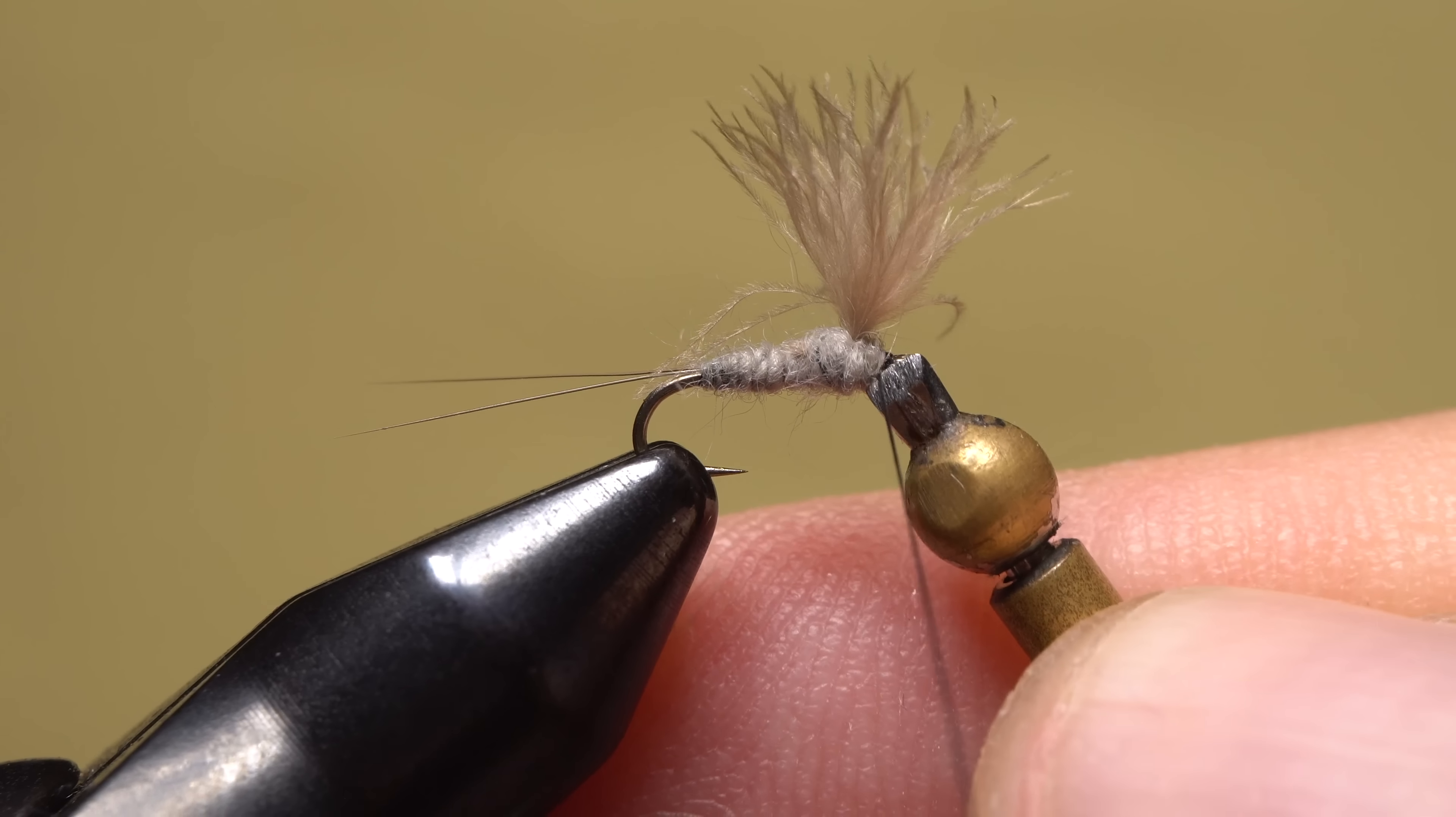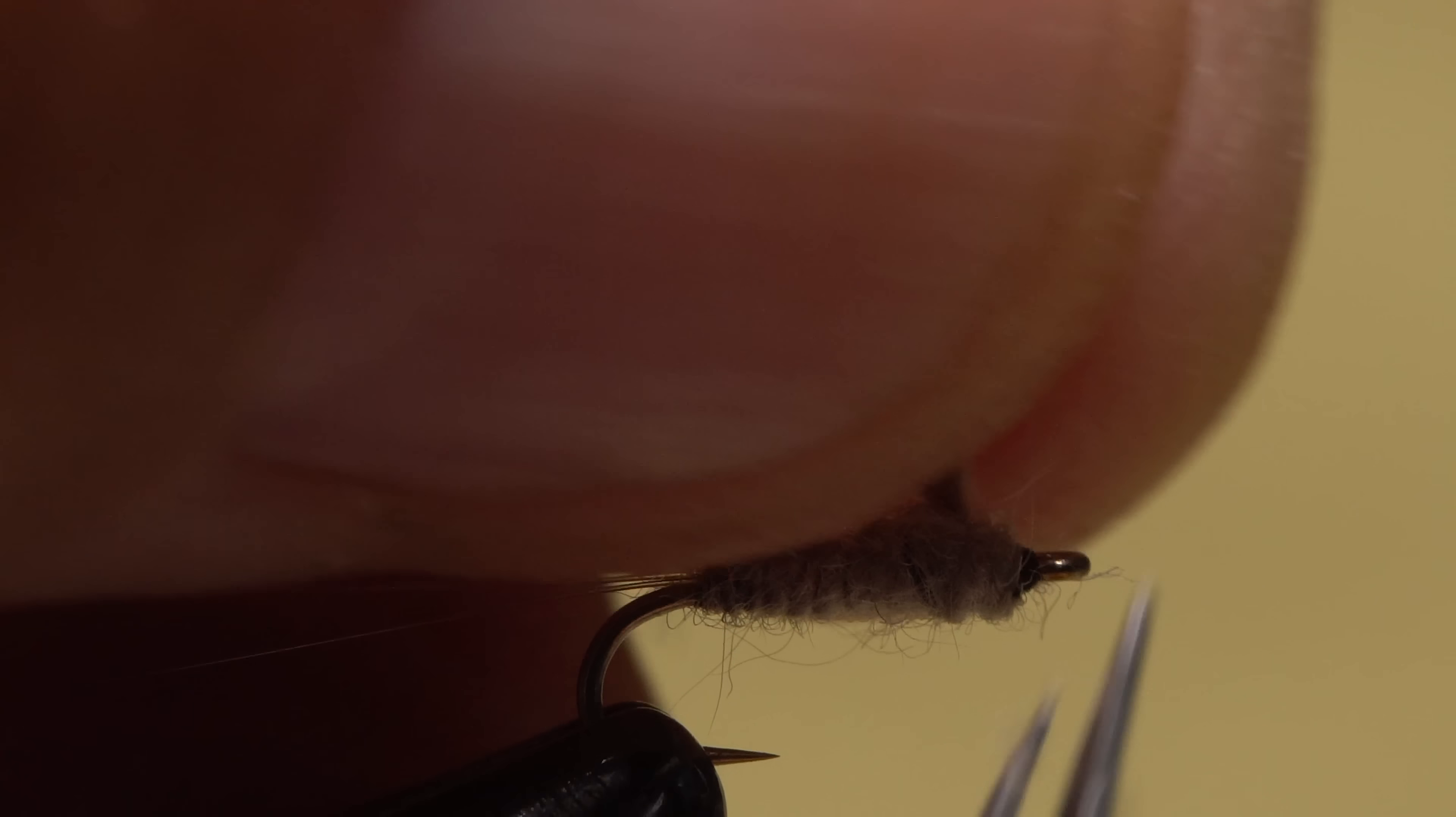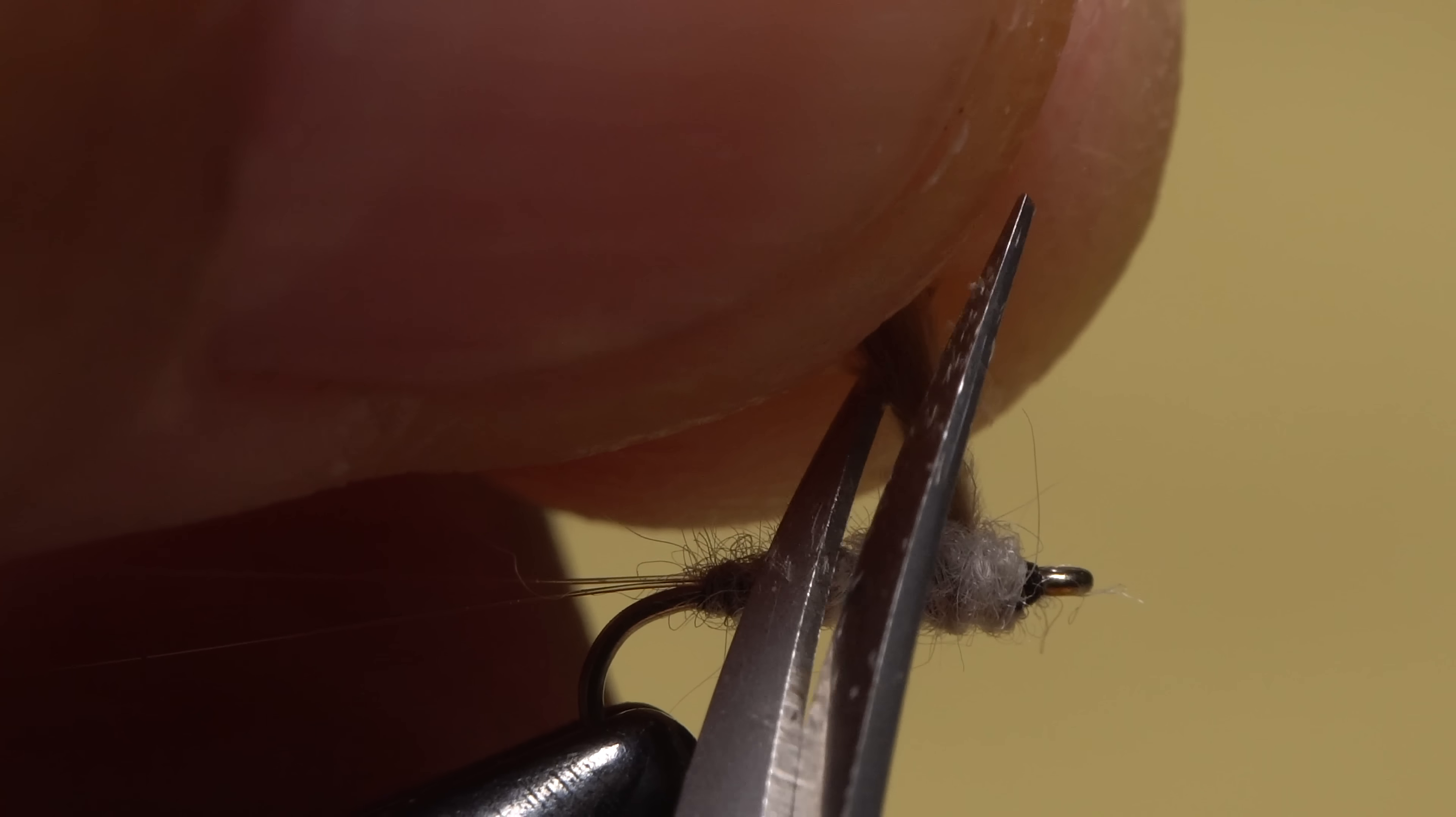You can then pick up your whip finish tool and complete a four or five turn whip finish, seat the knot well and snip or cut your tying thread free.